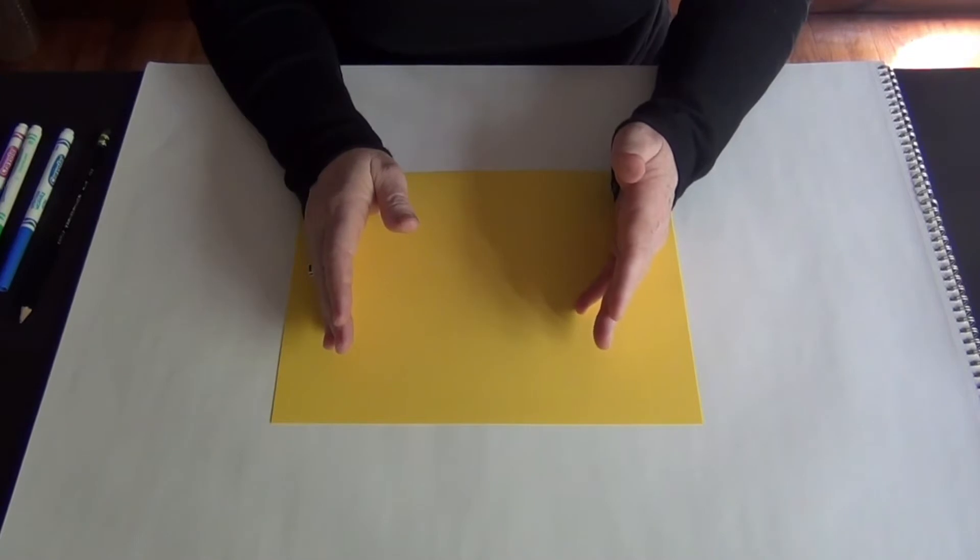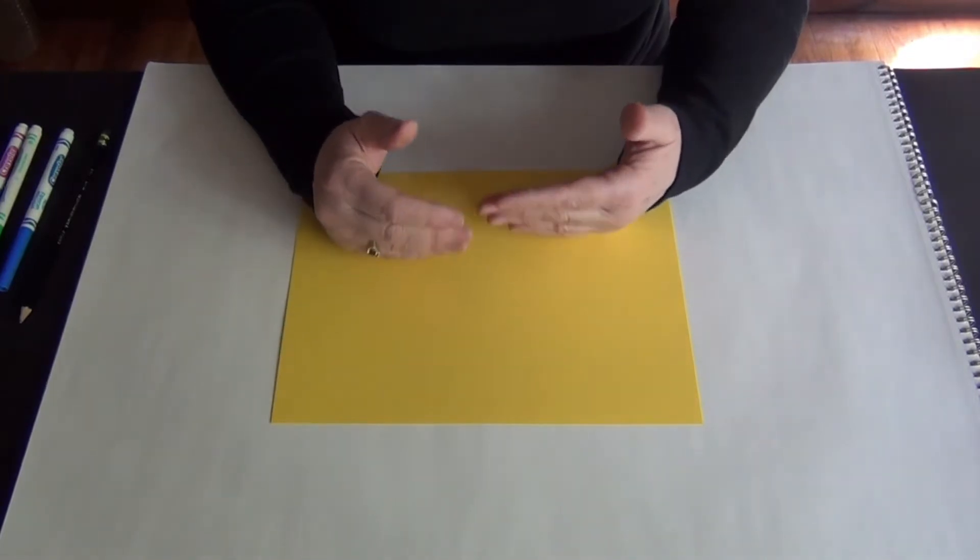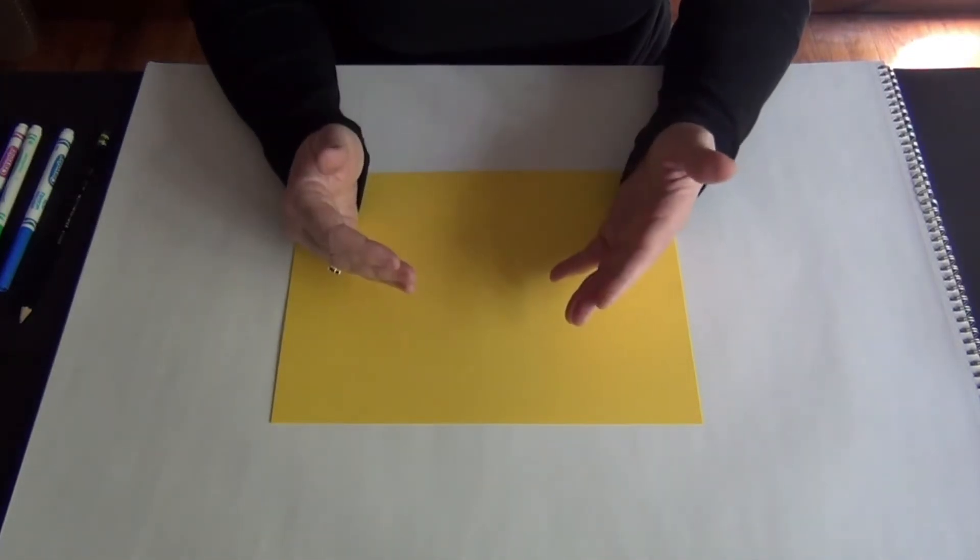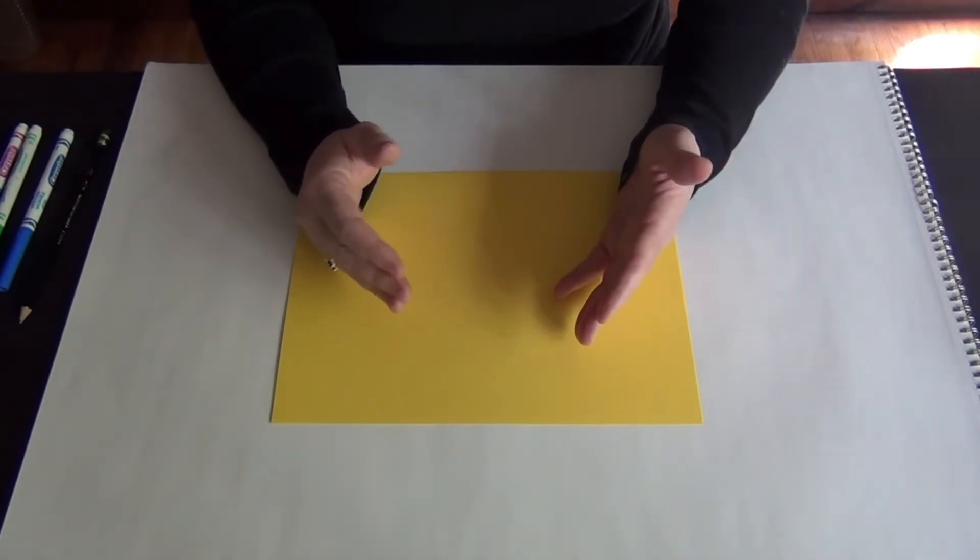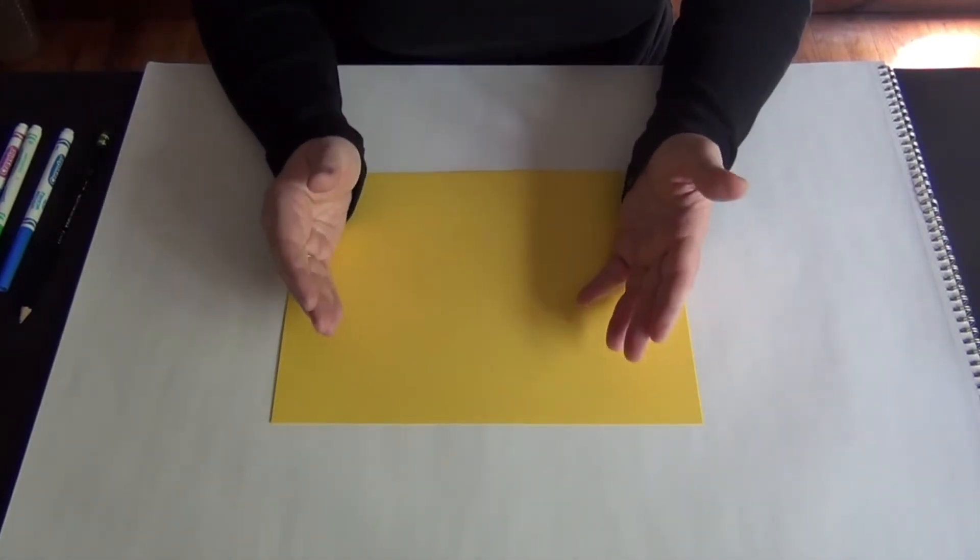Well today we're going to make drawings that kind of use that same impulse to imagine things from abstract shapes. These are called loopy drawings. Some people call them scribble drawings.